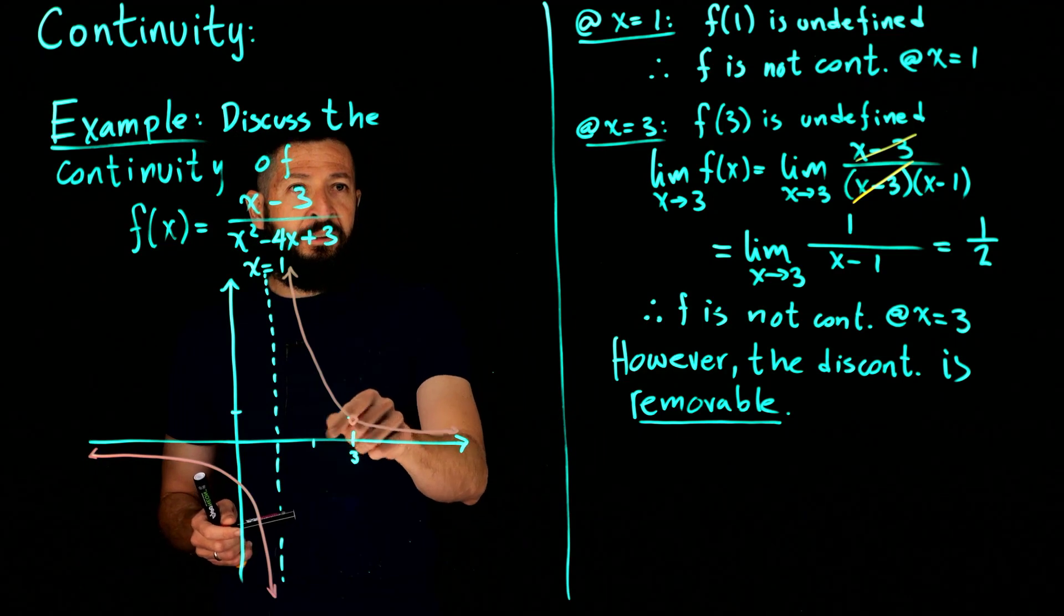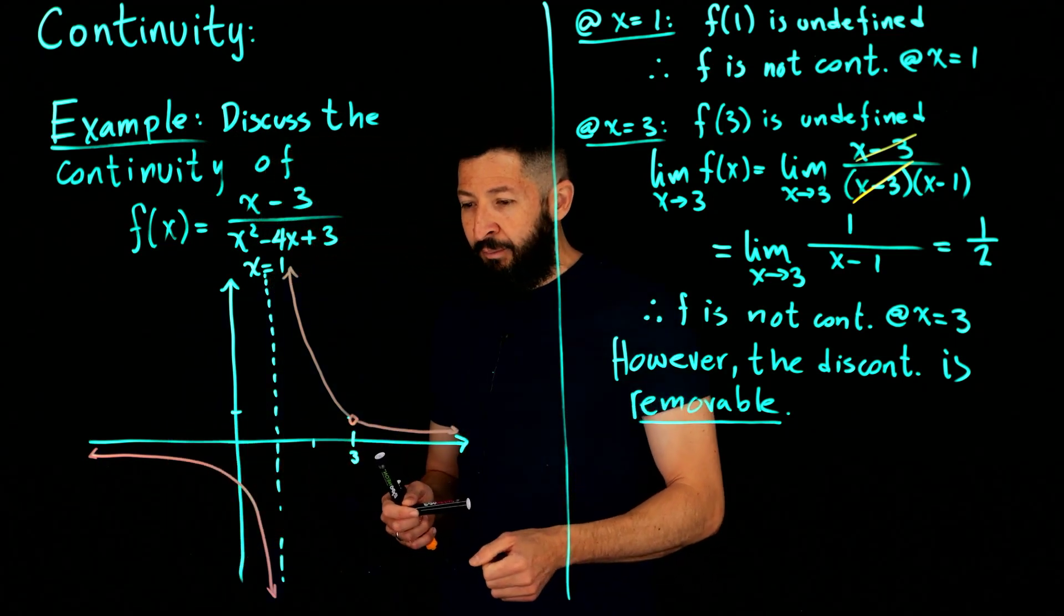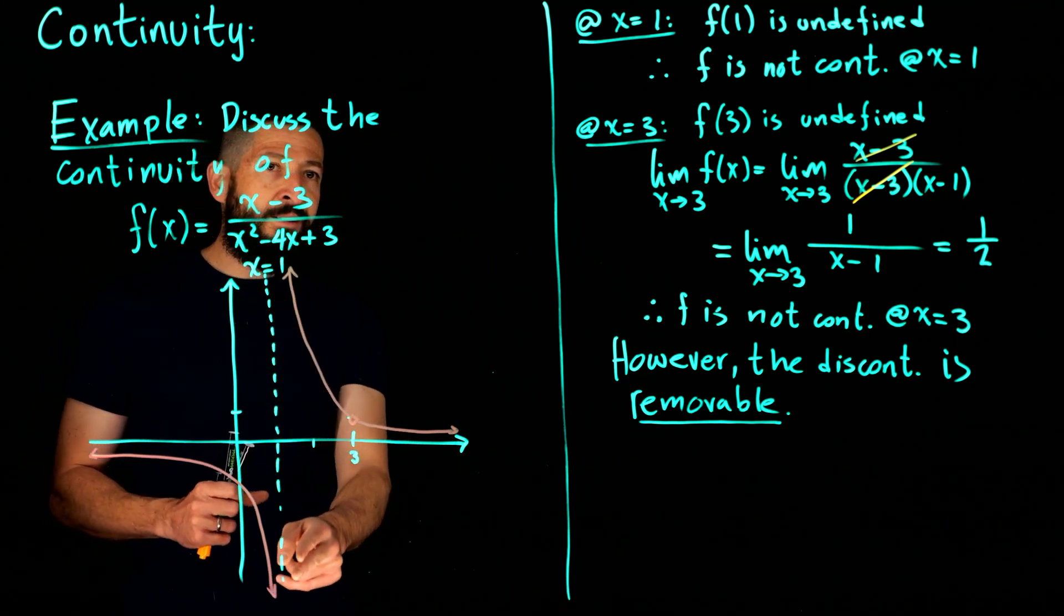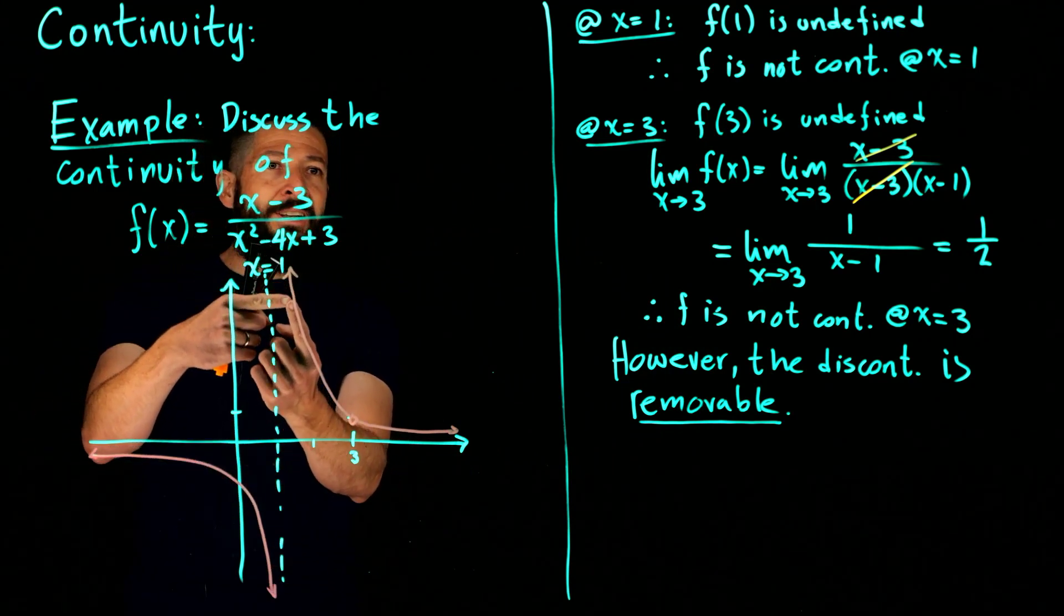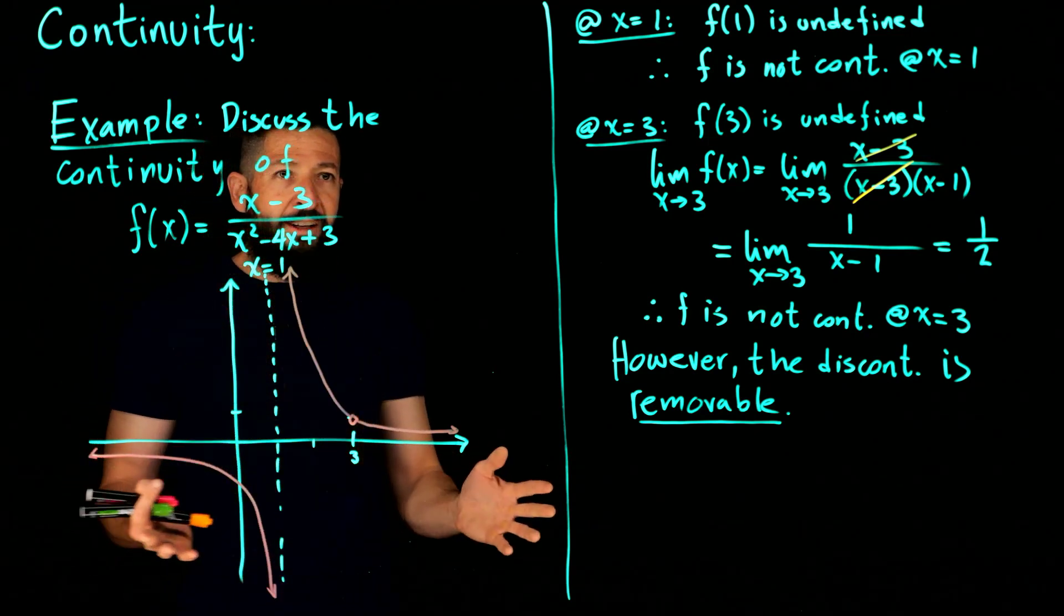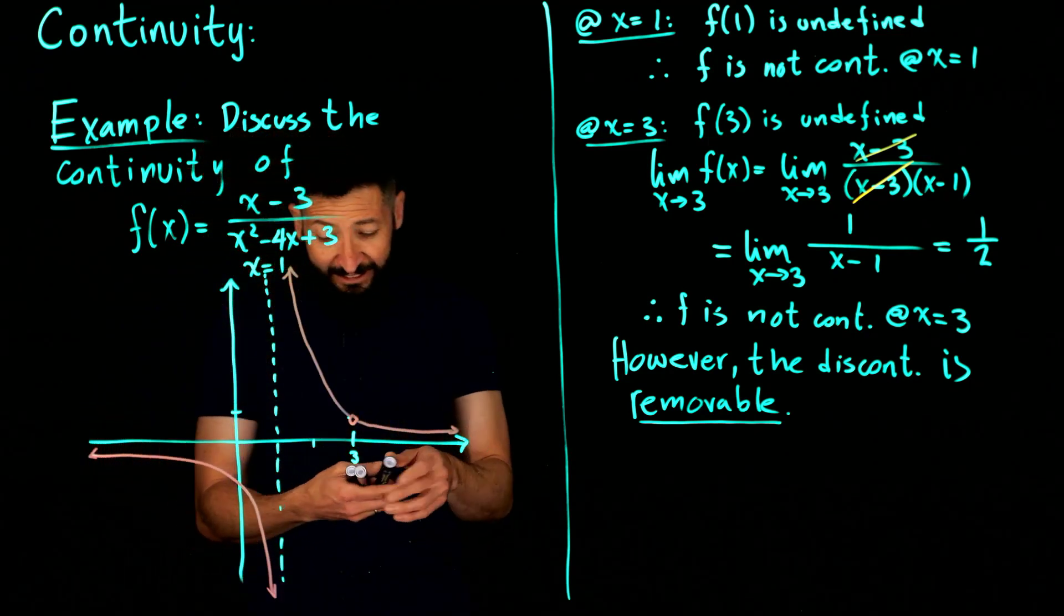However, here it's not taking it, not taking that value. So now you see the discontinuity at x equals to 1 is essential. You cannot re-glue the function in any possible way that would make it continuous. It's just there. You'll have to deal with it. However, this one, what you could do if you really wanted this function to be continuous.